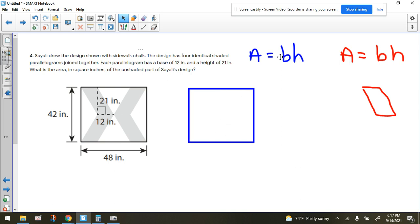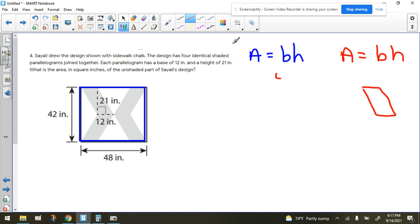Wouldn't we be multiplying the base times height to find the area of this blue rectangle? And what are the dimensions of the blue rectangle? Well, the base is 48. The base is 48, and the height is 42. So we'd be multiplying 48 times 42.